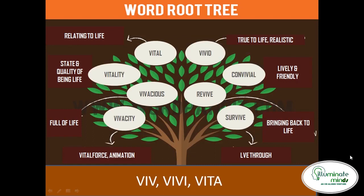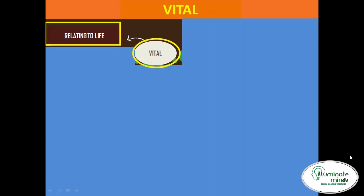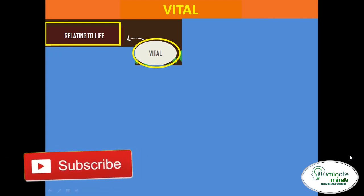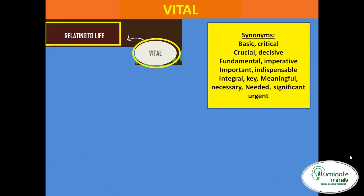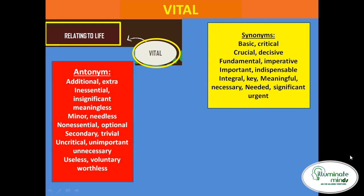Just have a look at the word root tree — eight words are given. The first word we will take up is 'vital'. Vital is used for something which is related to life. Hindi mein iska matlab hota hai something which is full of life, which is very very important. Synonyms are: critical, crucial, decisive, imperative, indispensable, integral, meaningful, needed, significant.